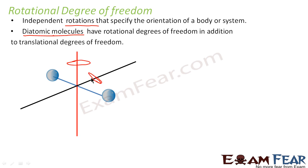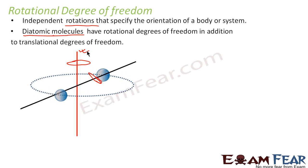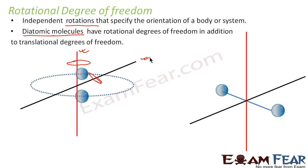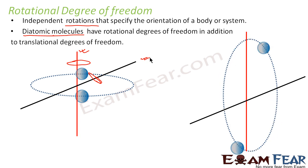Either the molecule can rotate about this axis or it can rotate about the other axis. In this diagram we are showing the rotation about the red axis — it will rotate somewhat like this. And the rotation that takes place along the black axis would be somewhat like this. So this rotation is taking place about the black axis.